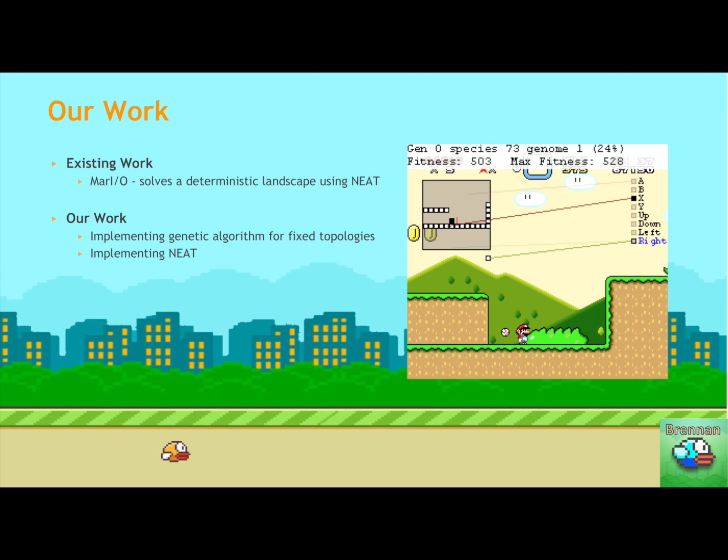So existing work out there, such as Mario, solves a deterministic landscape. And so what I mean by this is it solves the first level of Mario, where the map is always the same, and the enemies always follow the same pattern. But we wanted to know if NEAT would work for more of a random game or for an element of entropy. So our hope is that an equivalent of Mario with a deterministic landscape would be like uniform pipes occurring. Whereas if we have random pipes, we want to know if using NEAT and using this genetic algorithm can overcome that.